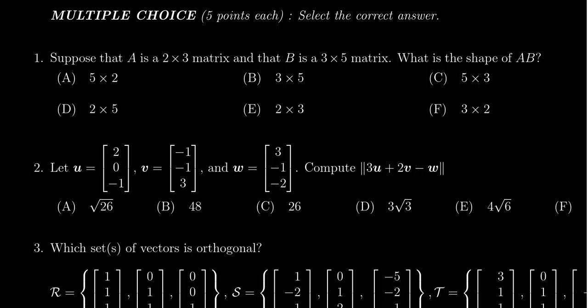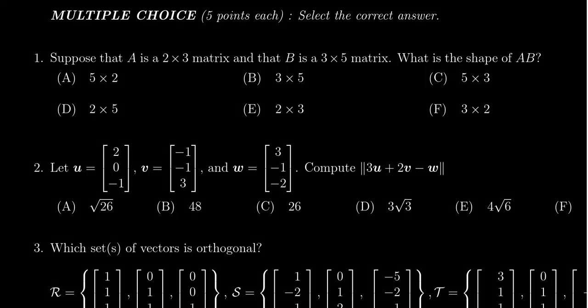In this video we present the solution to question number one from practice exam two from Math 2270. We are asked to multiply together a 2×3 matrix and a 3×5 matrix and determine the shape of their product A times B.